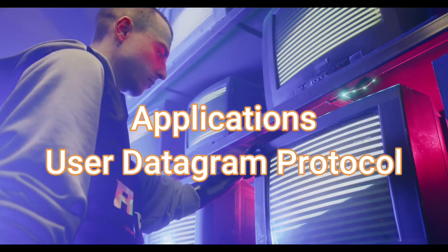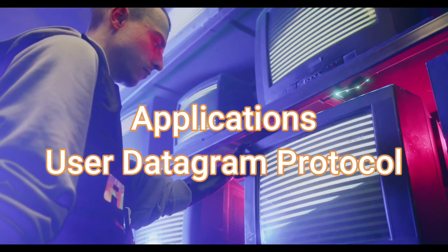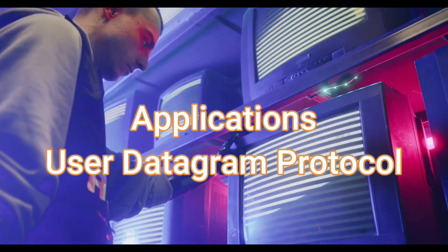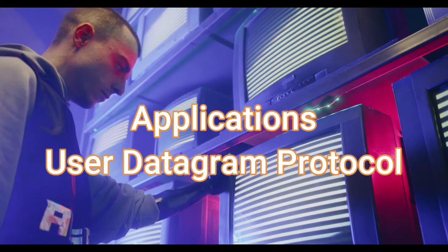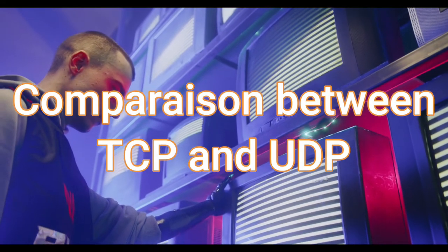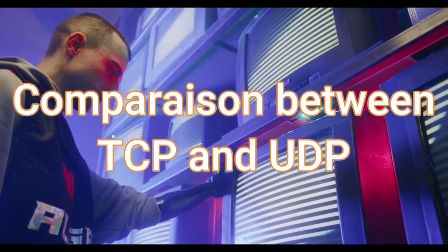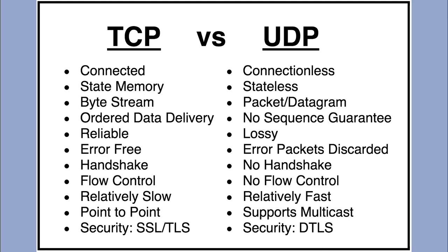Now that we've explained what TCP and UDP mean, let's look at the differences between both. Looking at this comparison table, we can see the differences and advantages of each. To be honest, it's about 50/50 — let's check out both sides of TCP and UDP to decide which is more advantageous.